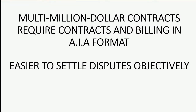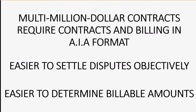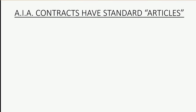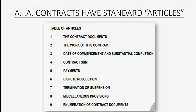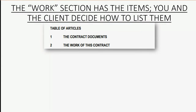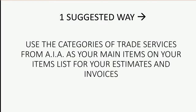It's easier to settle disputes objectively and easier to determine billable amounts using the AIA format. Contracts in the format from the American Institute of Architects have standard sections called articles, and it's the "work of this contract" article where you sit down with your client and decide how to list the work in the contract, the estimate, and the job invoices. One suggested way to match the items in the contract with the items list in QuickBooks is to use the categories of trade services from the AIA as your main items on your items list for estimates and invoices.